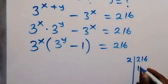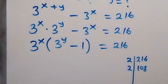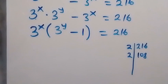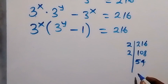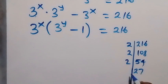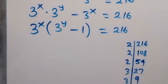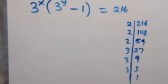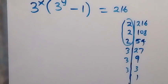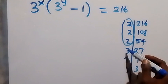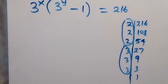Now we express 216 as a product of its prime factors. Dividing: 216 ÷ 2 = 108, ÷ 2 = 54, ÷ 2 = 27, then 27 ÷ 3 = 9, ÷ 3 = 3, ÷ 3 = 1. We have 2 appearing three times and 3 appearing three times, so 216 equals 2 raised to power 3 times 3 raised to power 3.